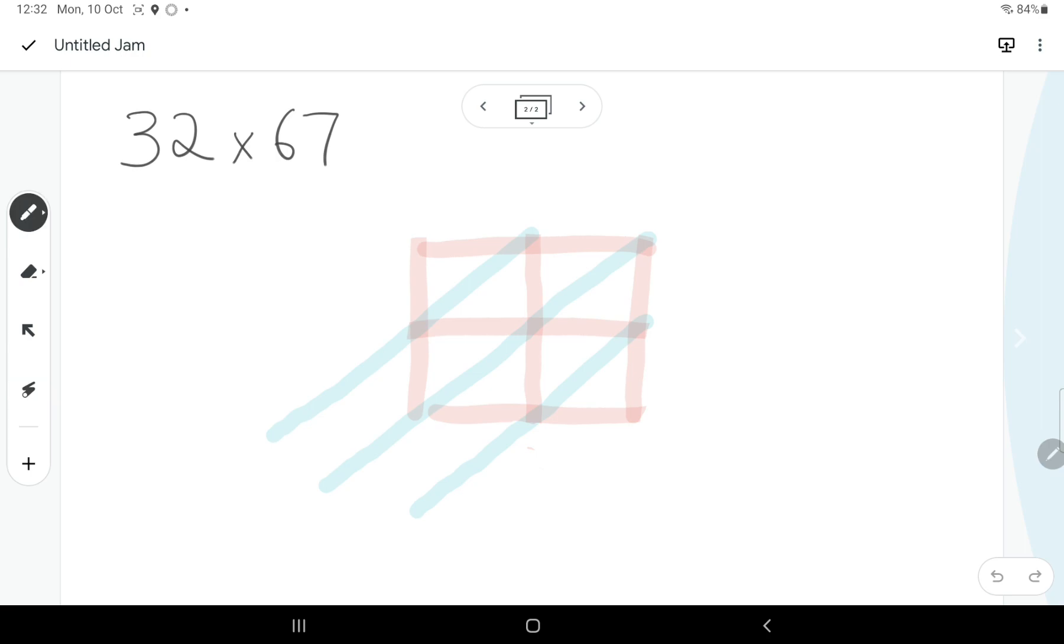Next thing we need to do is put our numbers on the grid. So let's start with 32 times 67.